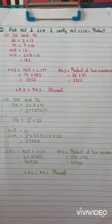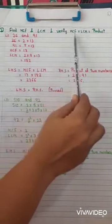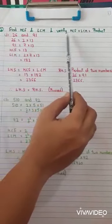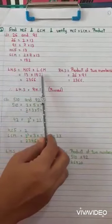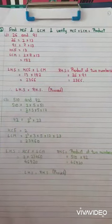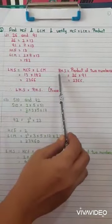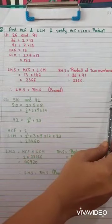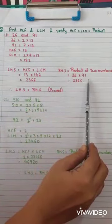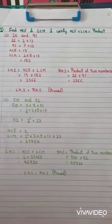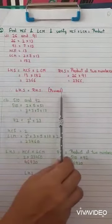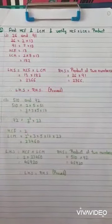Now we verify: LHS equals HCF into LCM equals 13 multiplied by 182 equals 2366. RHS equals product of the two numbers: 26 multiplied by 91 equals 2366. LHS equals RHS, so it is proved that LCM into HCF equals the product of two numbers.